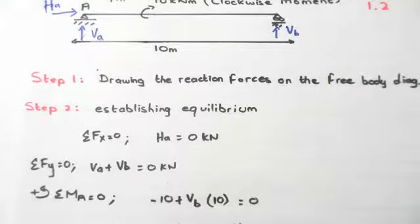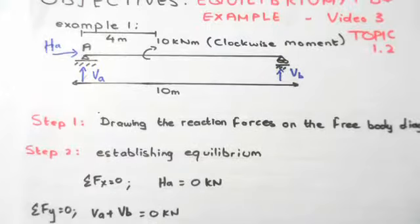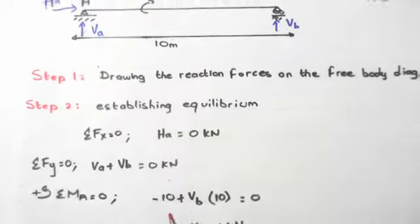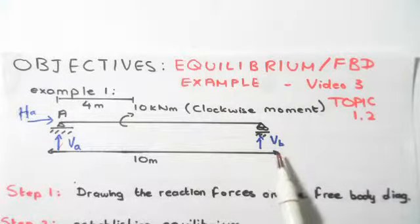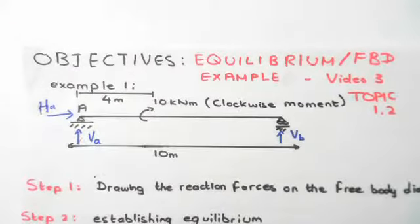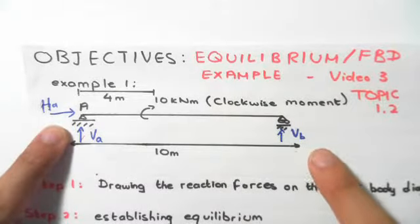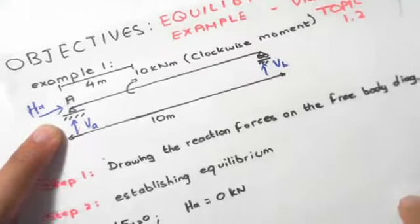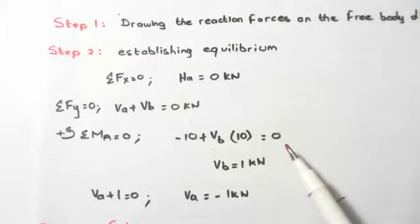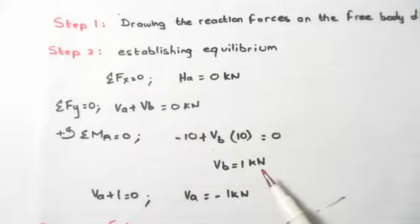Taking moments about point A: first, we have minus 10 for the clockwise moment — clockwise is negative, anti-clockwise is positive. Then we add Vb multiplied by 10, because Vb has a lever arm of 10 meters to point A. Vb produces an anti-clockwise rotation about A, so it's positive. This gives: minus 10 plus 10·Vb equals zero, so Vb equals 1 kilonewton.